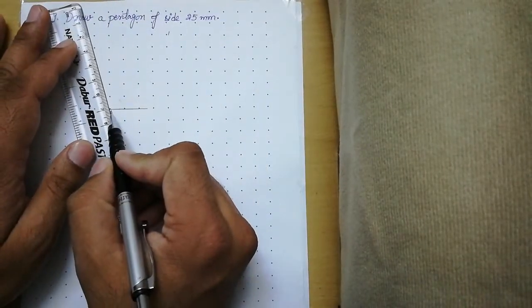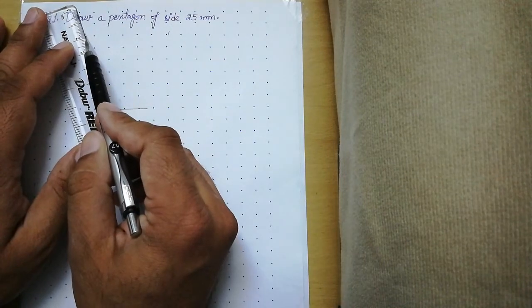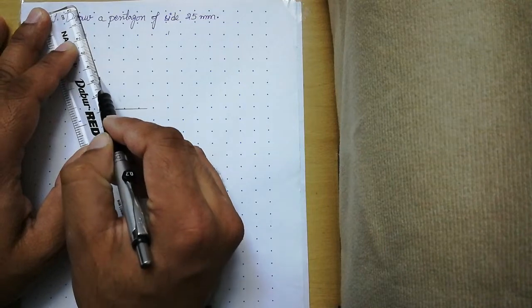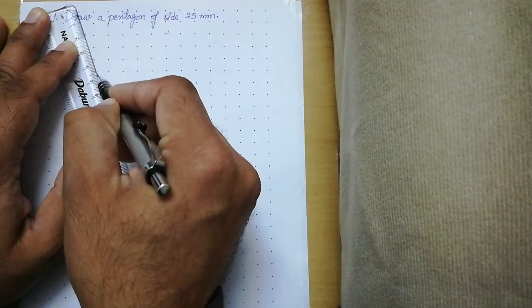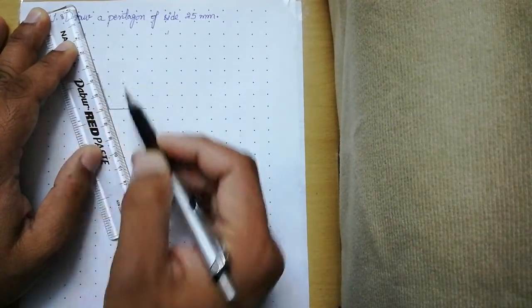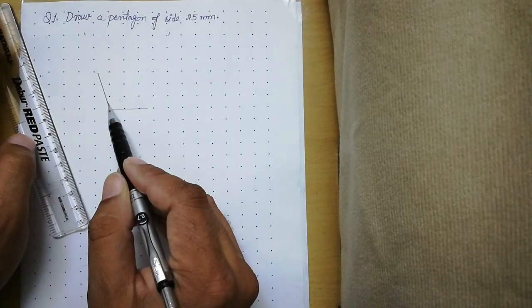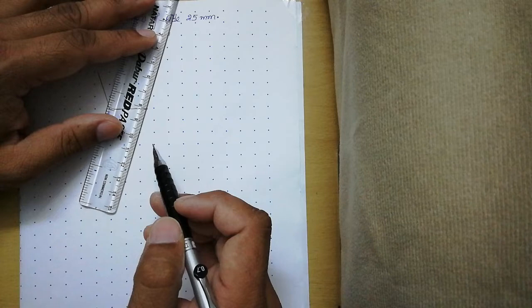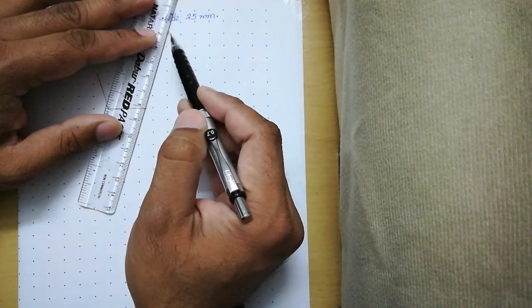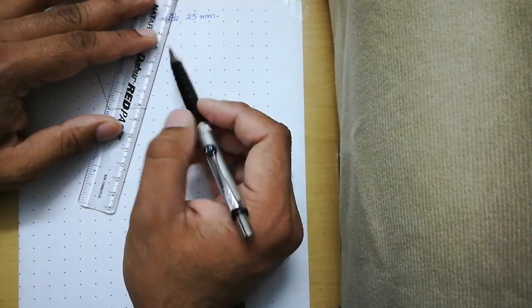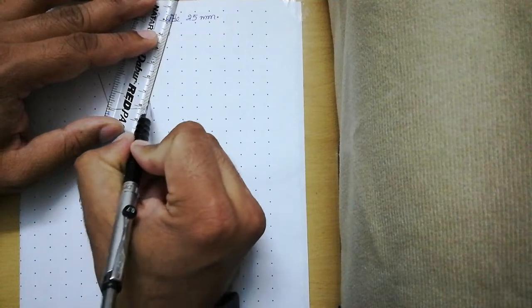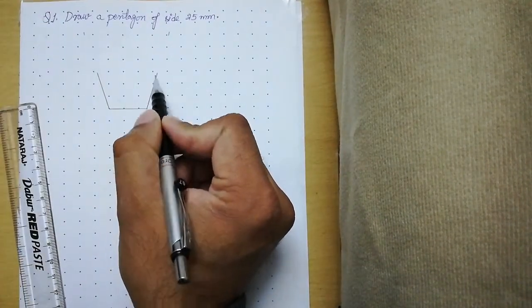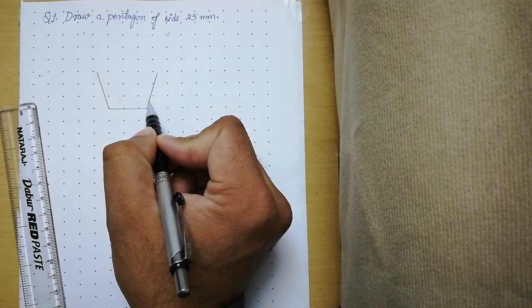Now what you need to do is align your scale with that particular point marked at 72 degrees and draw a line of 25 millimeters. This angle is 72 degrees. Now again align your scale at 72 degrees with this point marked and from here draw a line of 25 millimeters again. So this line is 25 millimeters at 72 degrees to the horizontal.